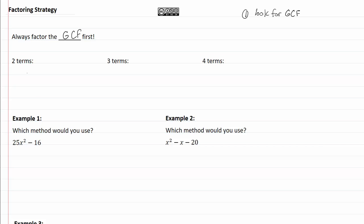And then if we have two terms, two terms means we have two different options. One is a difference of squares. That's going to look like a squared minus b squared, and that's going to give us a plus b, a minus b.